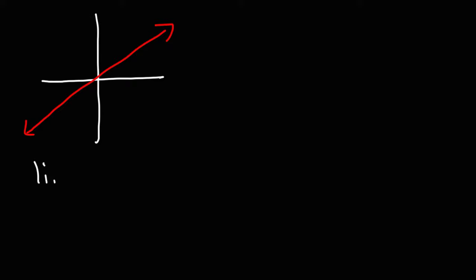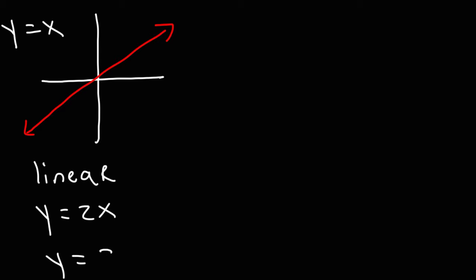Now let's talk about the different types of functions you'll encounter in a typical algebra or pre-calculus course. The first is a linear function. As you can see, it's a straight line, and the parent graph is y equals x. Variations include y equals 2x or y equals 3x plus 7 — x is raised to the first power.